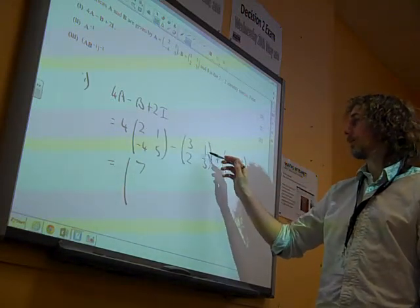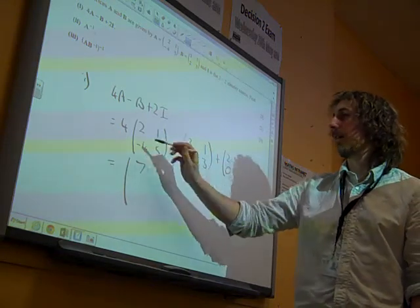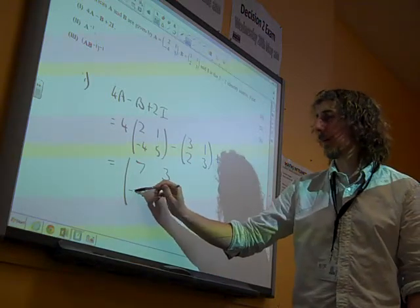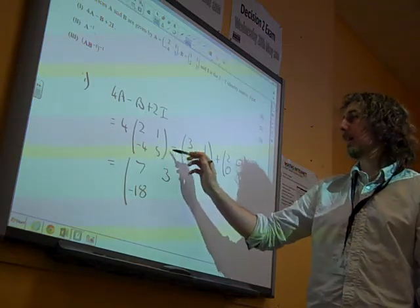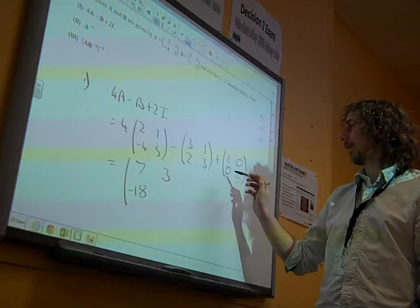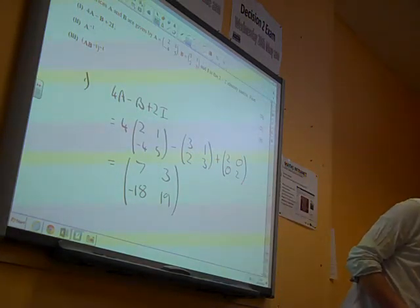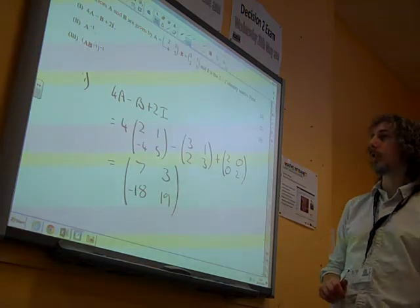4, take away 1 is 3, plus 0 is 3, minus 16, minus another 2 is minus 18, plus 0 is minus 18. And 20, take away 3 is 17, plus 2 would give us 19, and that's the answer that we were expecting, isn't it? 7, 3, minus 18, 19. Good.